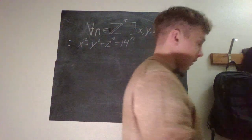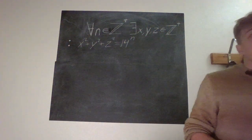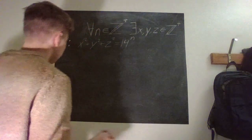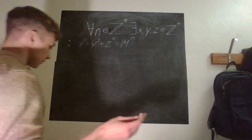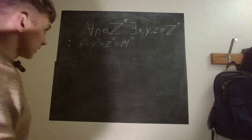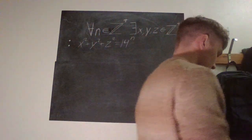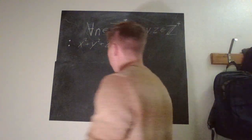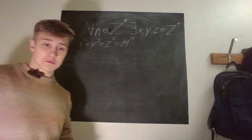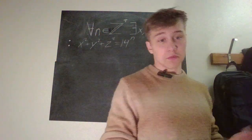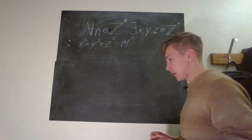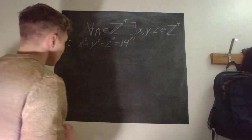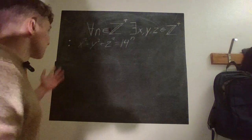Actually, if you think about it, this approach works for all even n's — but we'll come to that later. First, let's establish that if we find a solution for any n, then we can guarantee that if n increases by 2, we can just multiply all our solutions by 14.